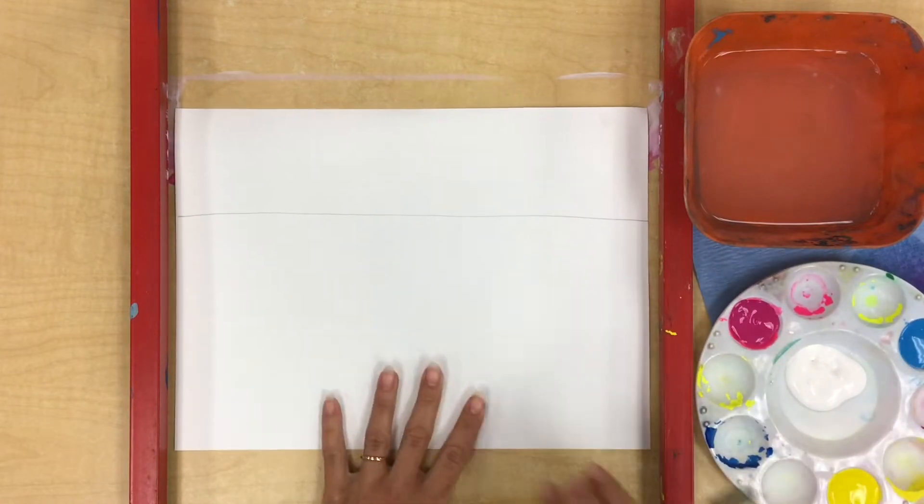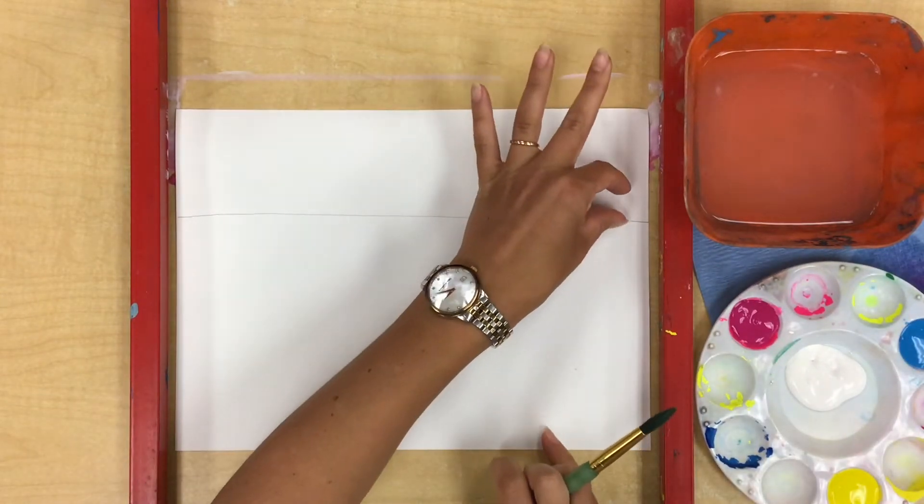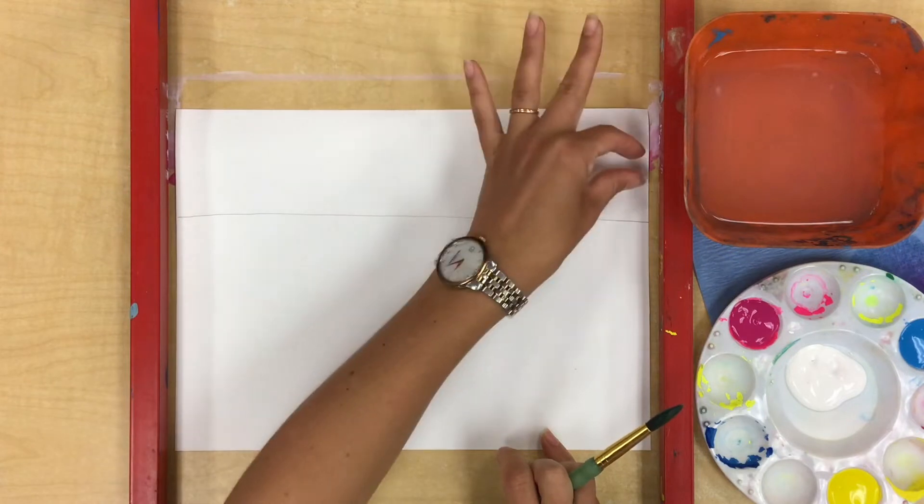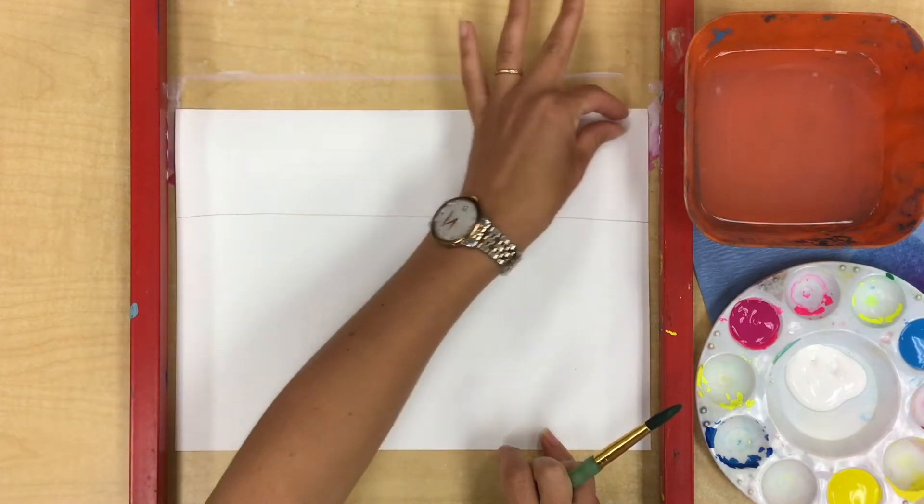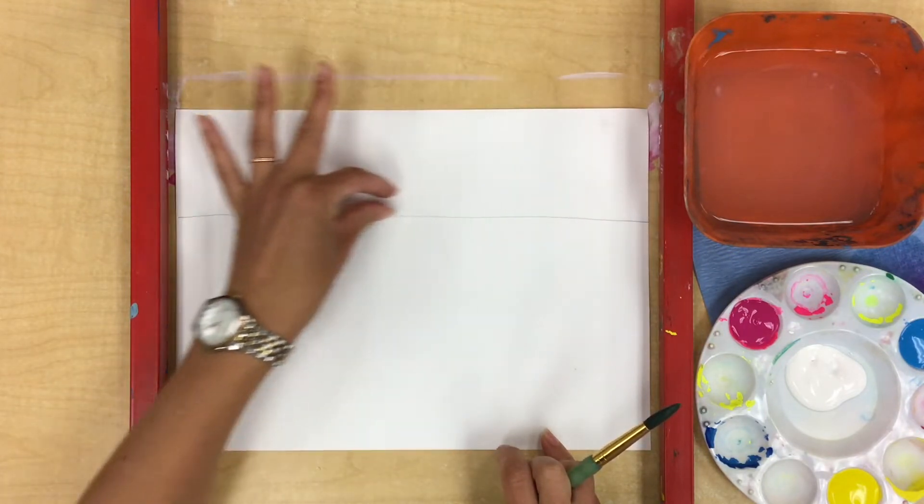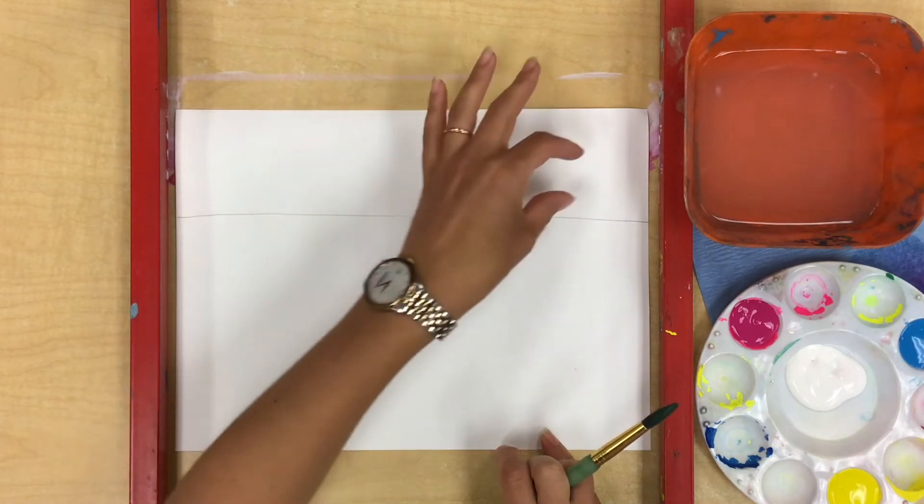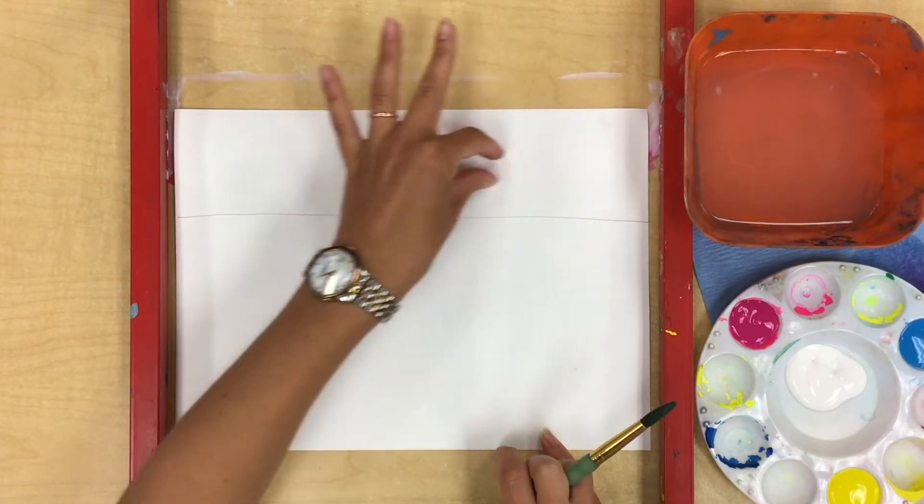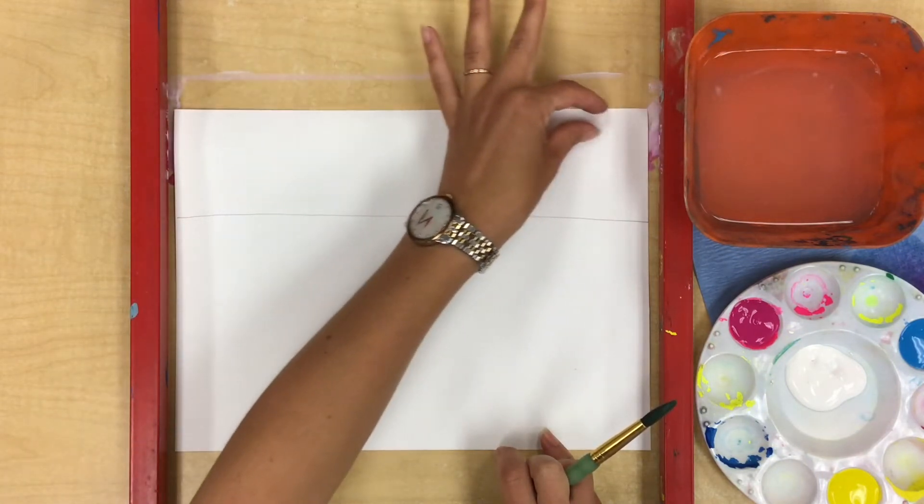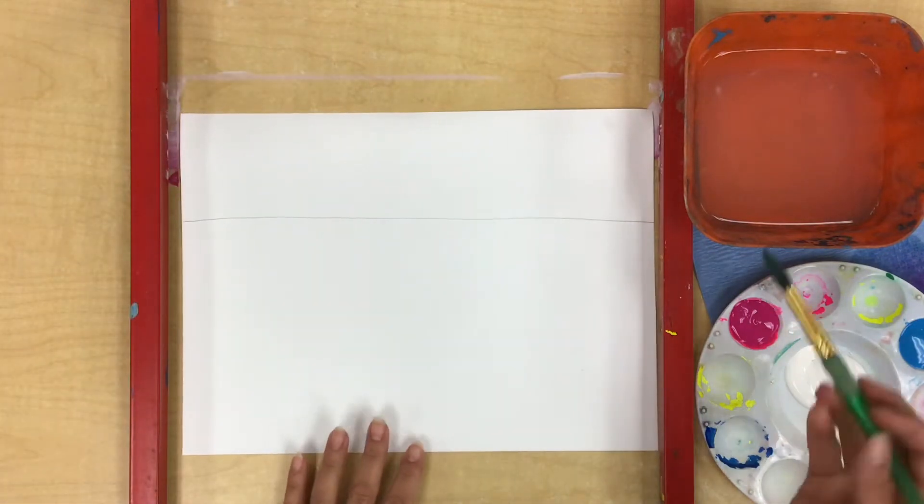So let's start today by imagining that we're going to be creating three different colors with our paint. We're going to create a dark version of pink or whatever color you choose, a medium light version of pink, and a very light version of pink at the very top.